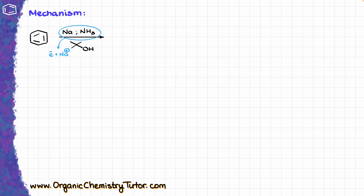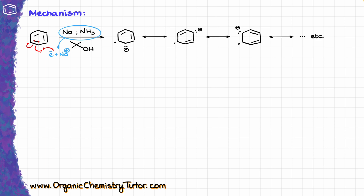The first step of this mechanism is the electron interacting with our aromatic ring. We take a bond of the aromatic ring — one electron is going to interact with our solvated electron, and another electron is going to stay with another carbon of our aromatic ring. That gives us a structure where we have an anion on one carbon and a radical on the adjacent carbon. Technically, this species is called an anion radical.